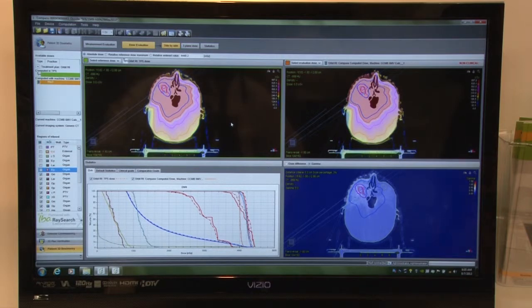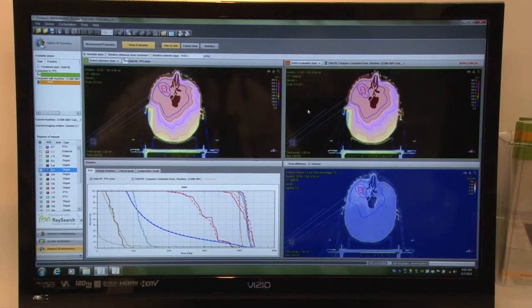So Compass has a very unique capability in the sense that it calculates against the TPS. We also have a unique function inside the software and the program that allows us to take a measurement. So we're going to measure dose response, we're going to convert that to fluence, and then we can reconstruct that dose in the patient CT data set as well.